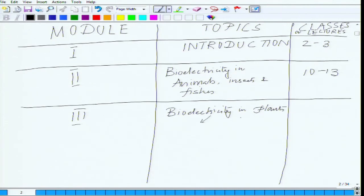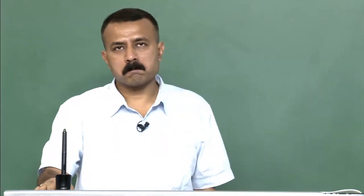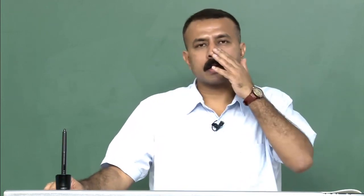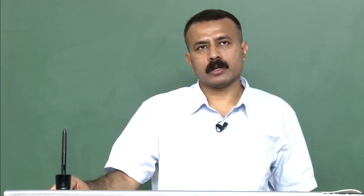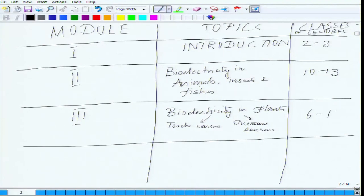From there we will move on to bioelectricity in plants — module three. Here we will talk about touch sensors and pressure sensors in plants, especially insectivorous plants like those that trap insects. We will also introduce the whole photosynthetic machinery — how photosynthesis takes place and how electrical events within the plant lead to the generation of energy. Around six to ten lectures will be devoted to this module.